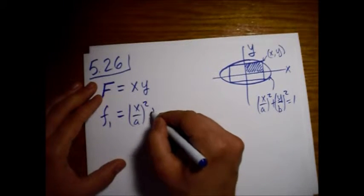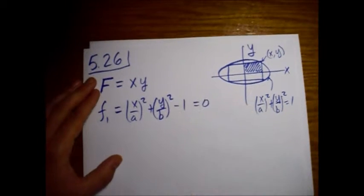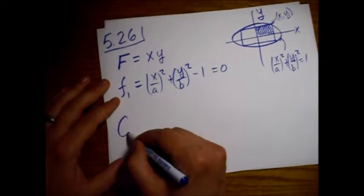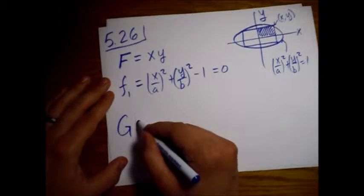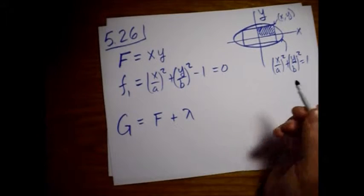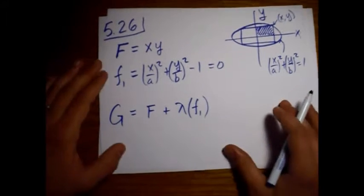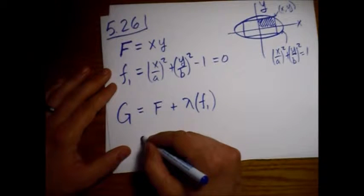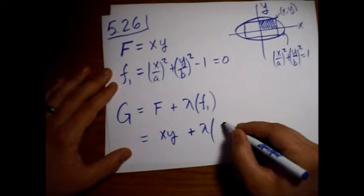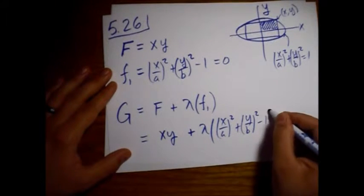So all we do is subtract 1 from each side: (x/a)² + (y/b)² − 1 = 0. Now we look at G, which equals f plus λ (our Lagrange multiplier) times f₁. We only have one constraint, so this is where we stop. G = xy + λ[(x/a)² + (y/b)² − 1].